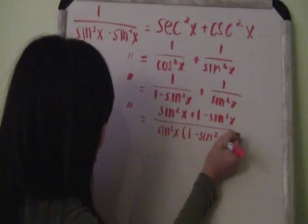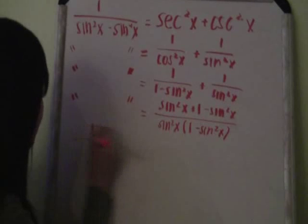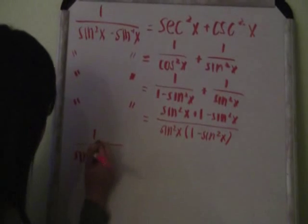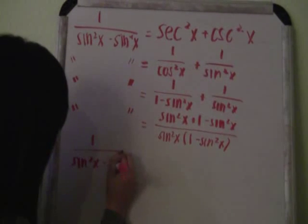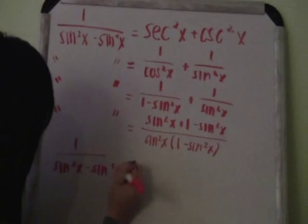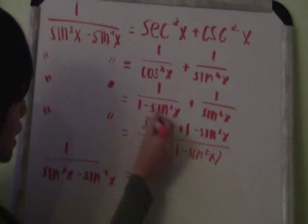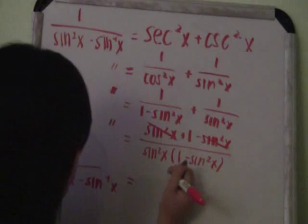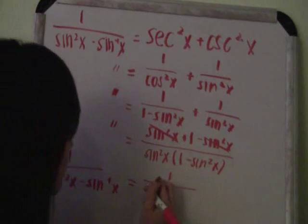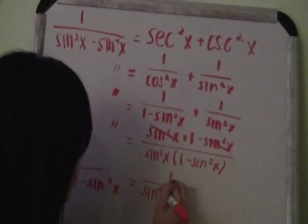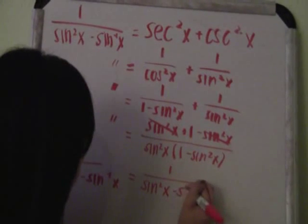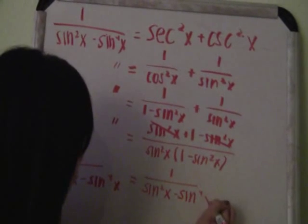Then we would bring down the 1 over sine squared x minus sine to the fourth x. These sine squared x's would cancel out and you're left with 1. Then you would distribute and get sine squared x minus sine to the fourth x.